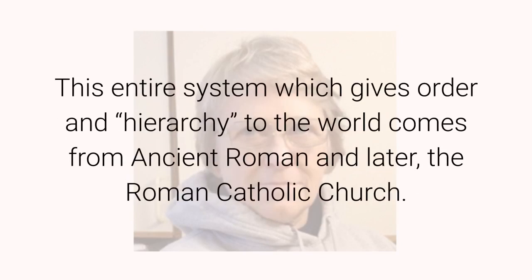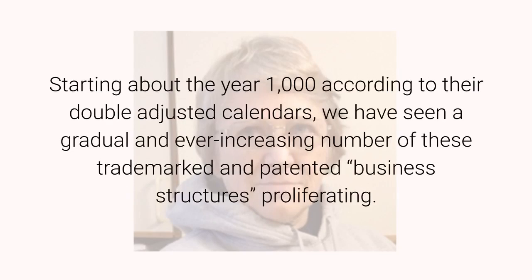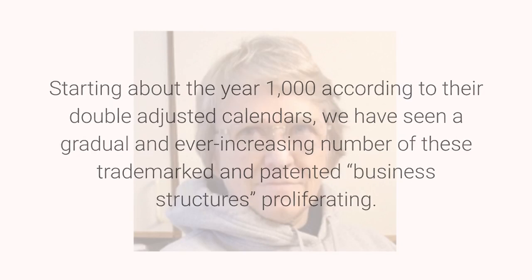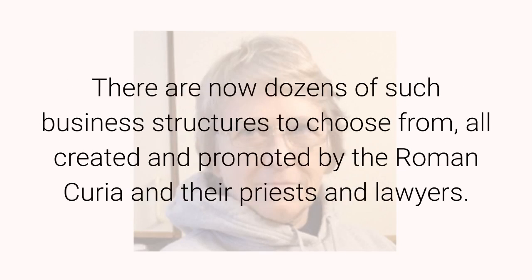This entire system, which gives order and hierarchy to the world, comes from ancient Rome and later the Roman Catholic Church, starting about the year 1000 according to their double-adjusted calendars. We have seen a gradual and ever-increasing number of these trademarked and patented business structures proliferating. There are now dozens of such business structures to choose from, all created and promoted by the Roman Curia and their priests and lawyers.